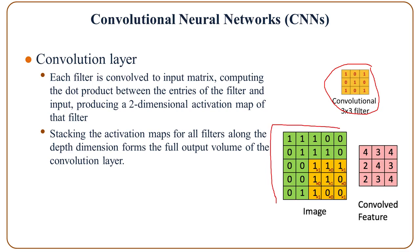If this is an image, we place the kernel at the bottom right corner and compute the dot product of the corresponding elements to get one value. Sliding the filter over the image from left to right and top to bottom, we get the output, which is a 3 by 3 matrix.